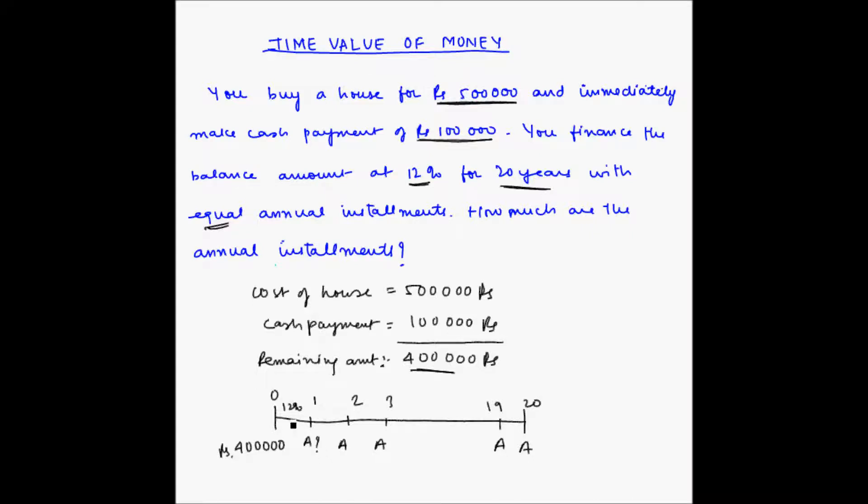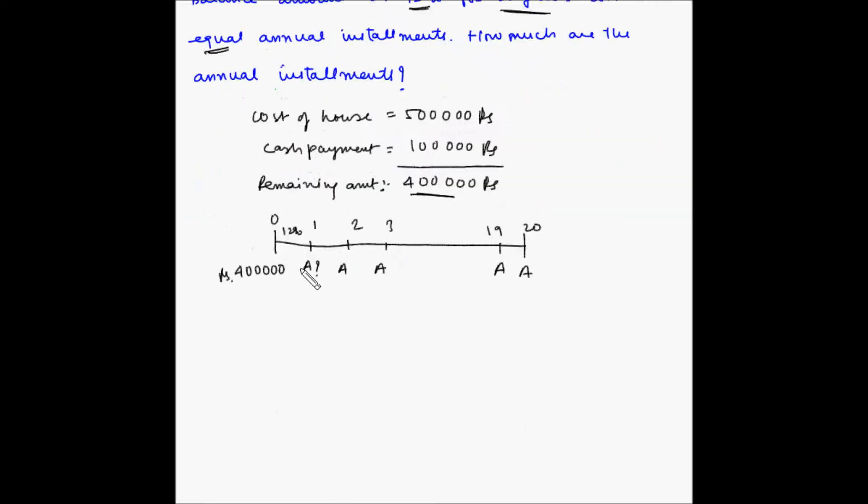Now here I am assuming that the installments are being paid at the end of each year, so now this becomes a case of an ordinary annuity. What is an ordinary annuity? First, let us recall what is an annuity. An annuity is a series of equal payments made at fixed intervals, and if these payments occur at the end of each year, the annuity is called an ordinary annuity.